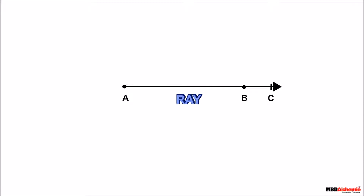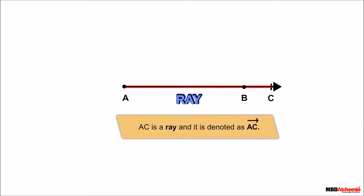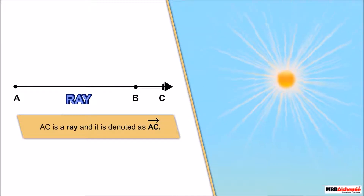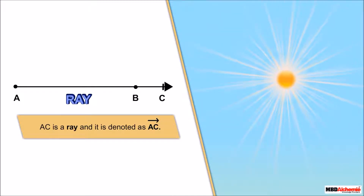A ray starts at a point and continues off to infinity. It can be extended in one direction from a line segment, so we put an arrow on one of its ends. Here we have ray AC, and it is denoted by a line with a single arrowhead over the top of the letters. Think of the sun's rays — they start at the sun and go on indefinitely.